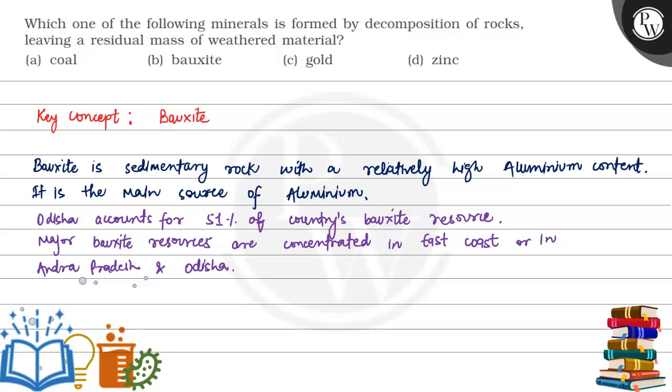Hello, let's see this question. This question says that which one of the following minerals is formed by the decomposition of rock, leaving a residual mass of weathered material. So this question asks which mineral is formed from rock decomposition, where the rocks leave the residual mass of the weathered material.